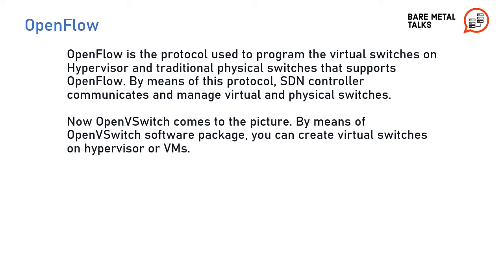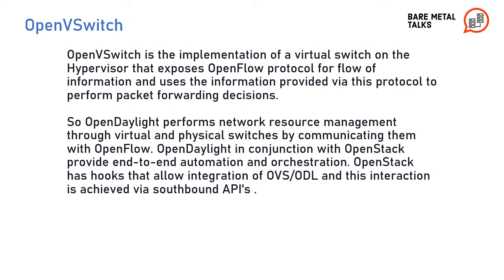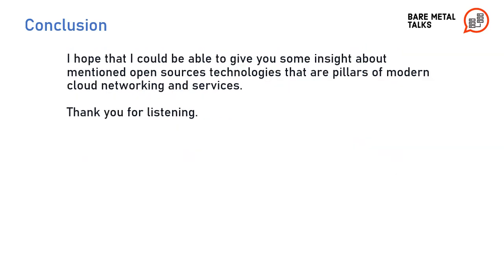Now OpenVSwitch comes into the picture. By means of the OpenVSwitch software package, you can create virtual switches on hypervisors or virtual machines. OpenVSwitch is the implementation of virtual switches on the hypervisor that exposes the OpenFlow protocol for flow of information and uses the information provided via this protocol to perform packet forwarding decisions. So OpenDaylight performs network resource management through OpenVSwitch and physical switches by communicating with them via OpenFlow. OpenDaylight, in conjunction with OpenStack, provides end-to-end automation and orchestration. OpenStack has hooks that allow integration of OpenVSwitch and OpenDaylight, and this interaction is achieved via southbound APIs. I hope I could give you some insight about these open source technologies that are pillars of modern cloud networking and services.